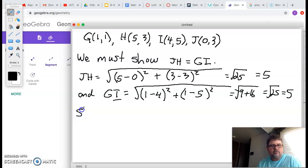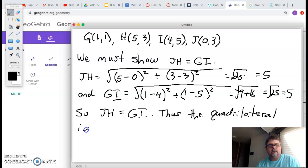so, JH equals GI. And finally, we're just going to say we're done. Thus, the quadrilateral is a rectangle. Done.